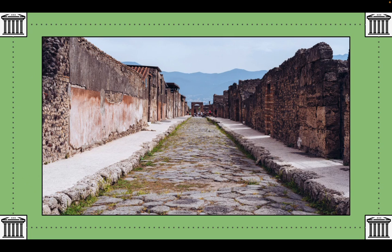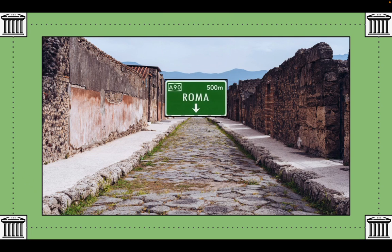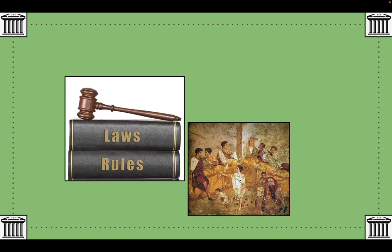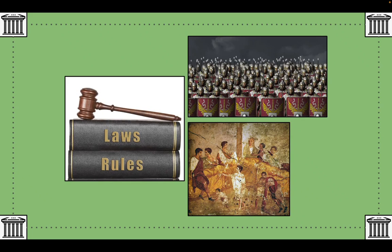Around 100 CE, the Roman Empire was at the height of its power. One phrase people would often say is 'all roads lead to Rome,' because for thousands of miles road markers showed the distance from a location to Rome. But it was more than just roads that connected the empire's 50 million people — they were also connected by Roman law, Roman customs, and the military might of the Roman army.